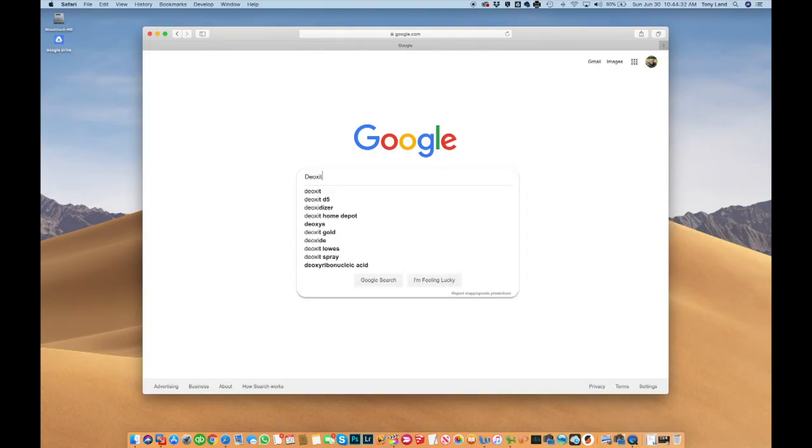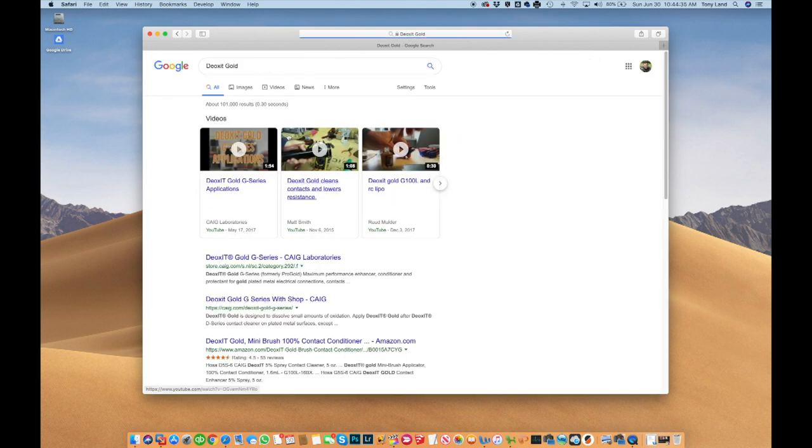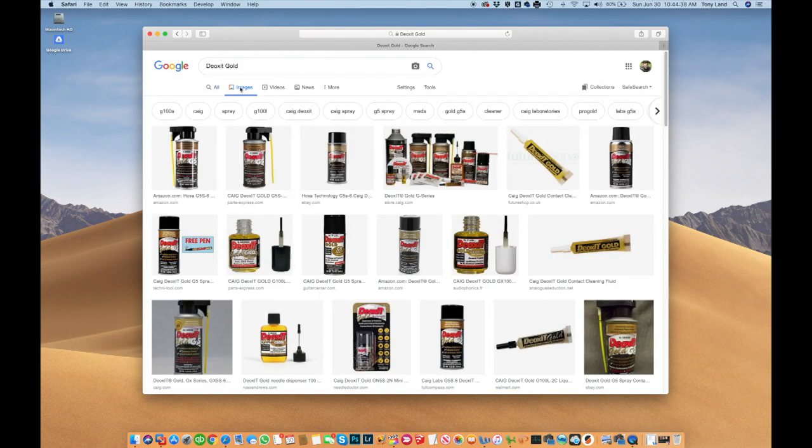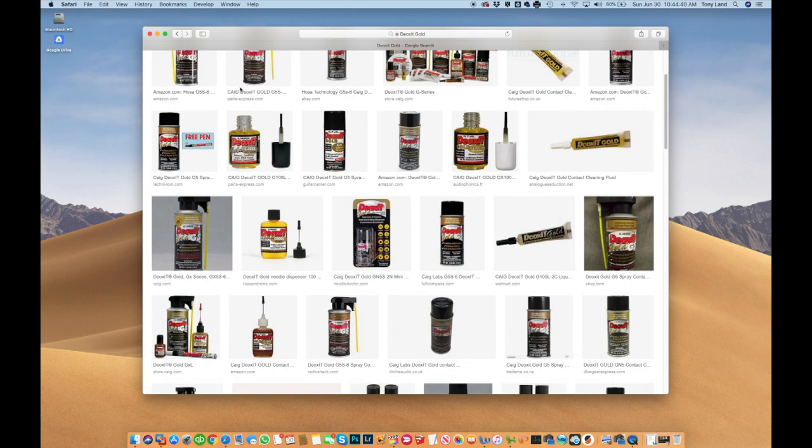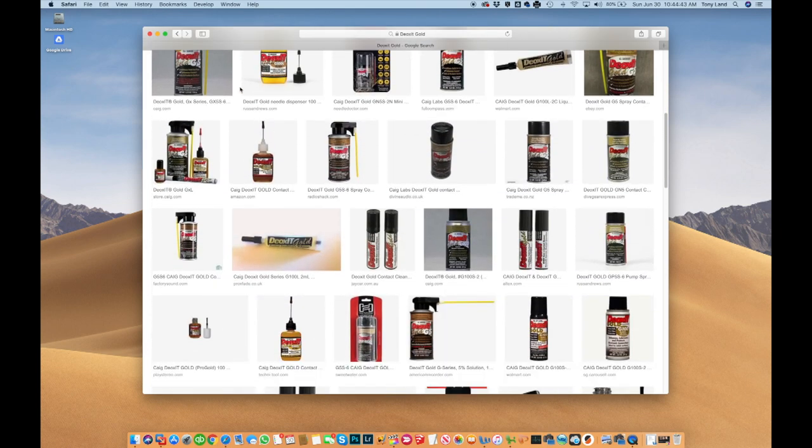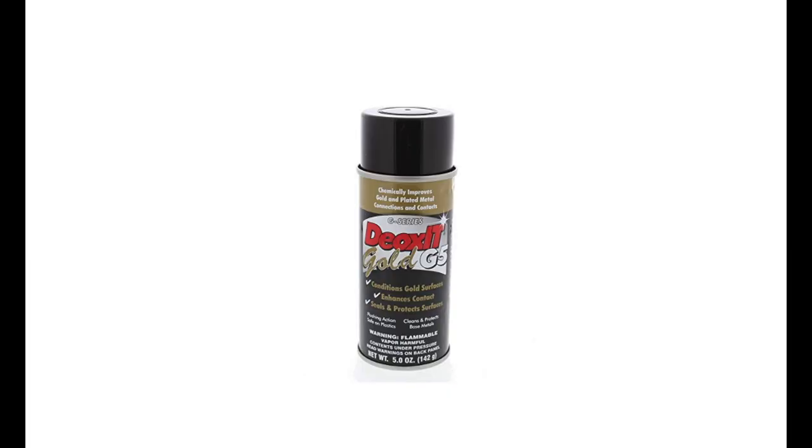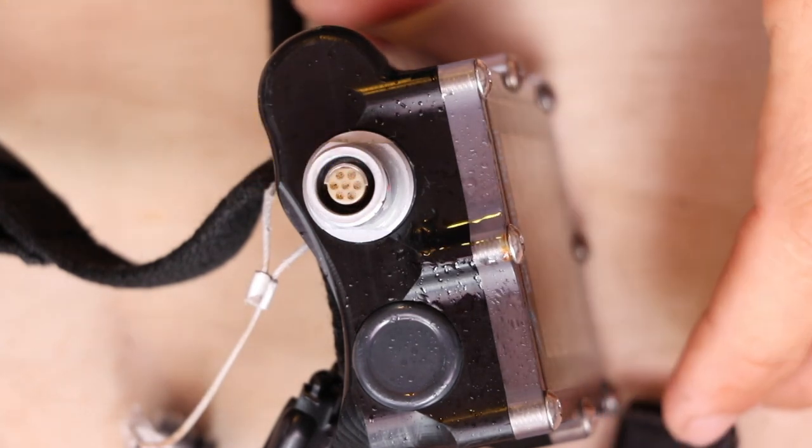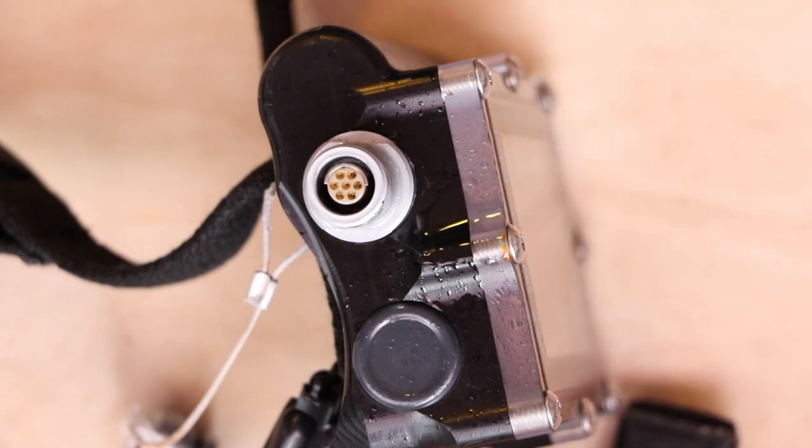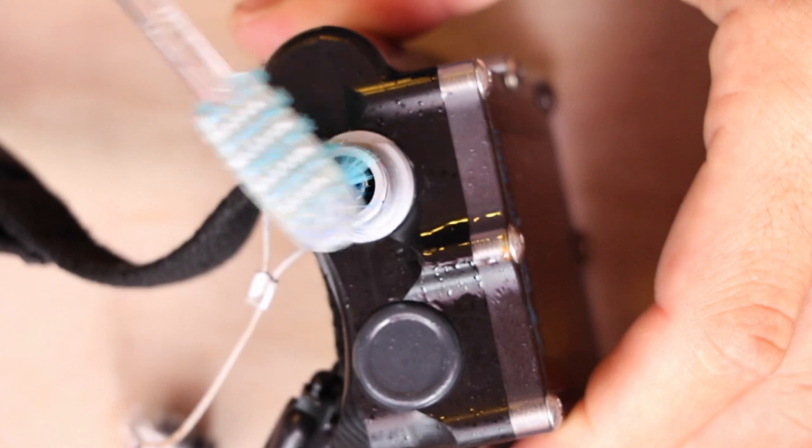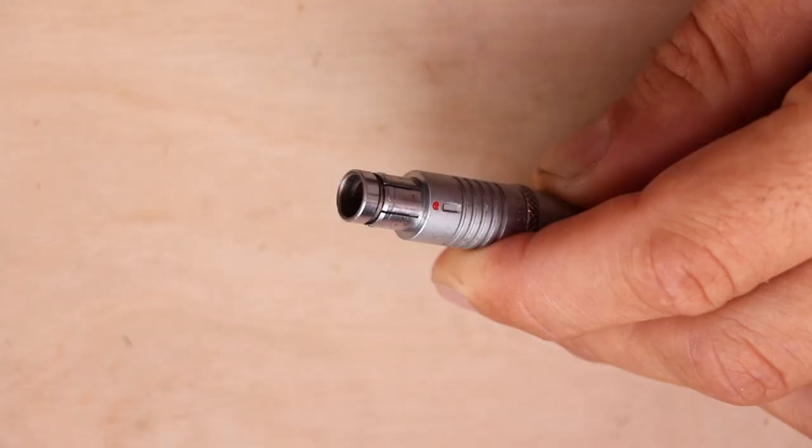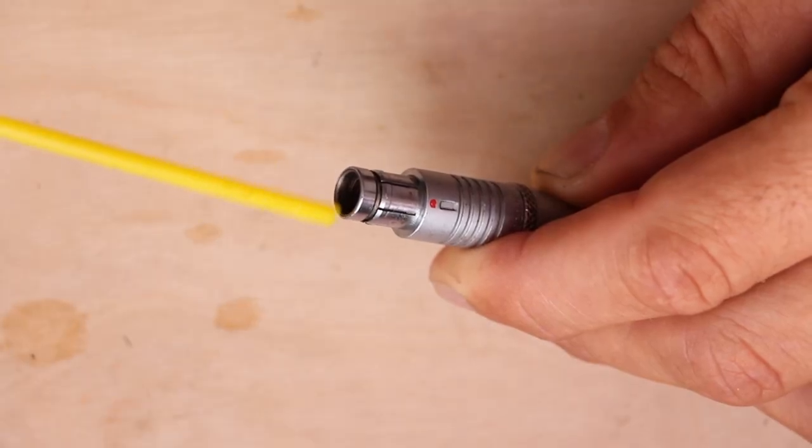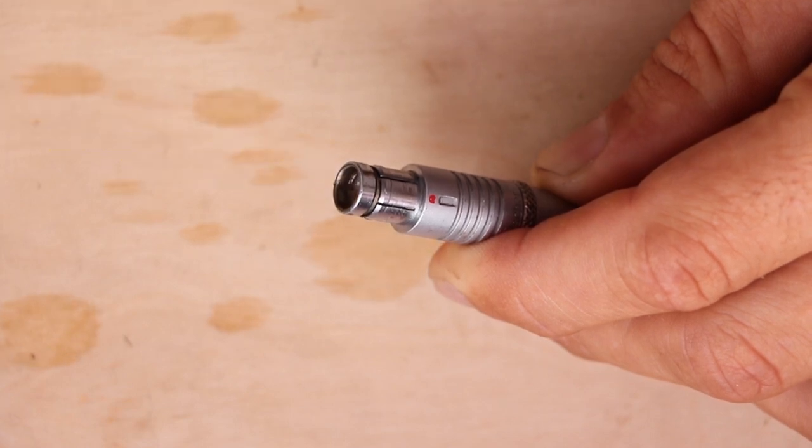For cleaning and maintenance what you want to do is get yourself some Deoxit Gold also known as G-Series or Gold G5. This is a gold contact cleaner and it's recommended for use with these connections. Deoxit makes several products so you want to make sure you're actually getting the Deoxit Gold. And what you can do you just spray it into your connection here. Try to get more of it in the connection than you do on the computer or your workbench. And if you still see some evidence of corrosion you can use a little toothbrush and just clean that out gently. And the same goes true for the male connection. Just spray a little bit in the end and let it sit.